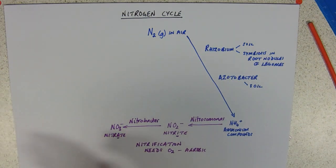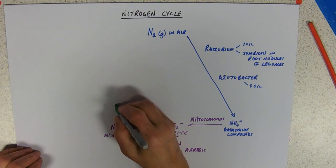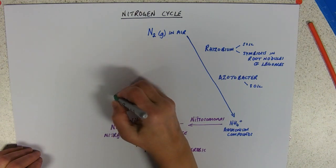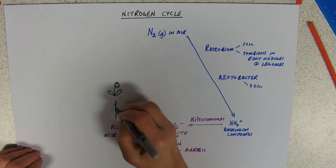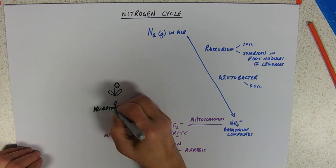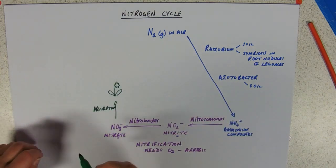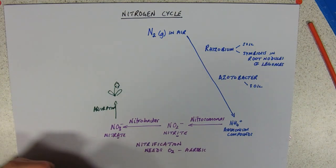Now, once we've got the nitrogen into this lovely form of nitrate, we can then do absorption into a plant. We can pass that along a food chain. Obviously, I'm not going to draw mice this time. And, of course, then we're going to get death and decay.